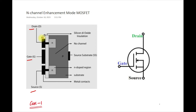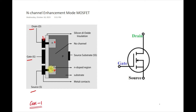The drain terminal is connected through a metallic plate — shown in black — to the N+ region. These two regions are called N+ regions because they are heavily doped; the plus indicates heavy doping. There is a P substrate which is lightly doped, and the N+ substrate regions are heavily doped. Through the metal plate, the source and drain are connected.